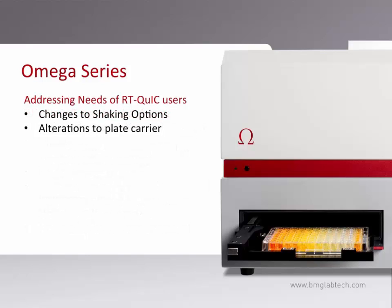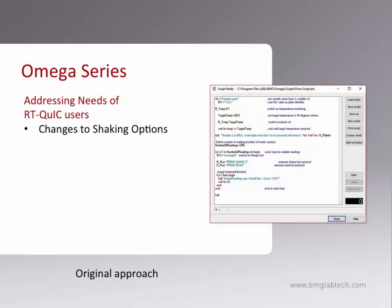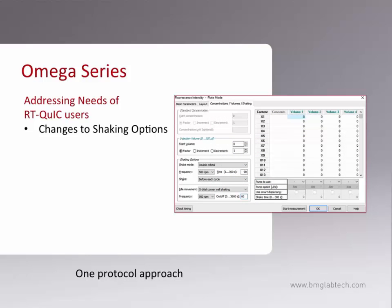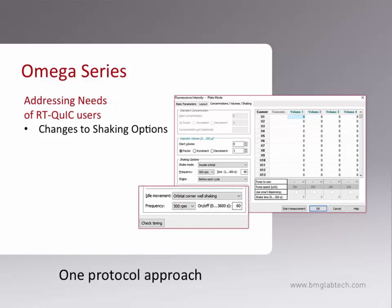As it became apparent to BMG that the RT-QUIC assay was very important among a segment of our customers, we sought their input as to how we might improve. When the RT-QUIC assay was originally designed, achieving the required shaking required a protocol distinct from that used to detect thioflavin T signal, and these two protocols were run repeatedly using BMG's scripting capability. Although the script approach was extremely successful, we thought it would be better if it was not required. To make a one-protocol approach possible, we changed the shaking capabilities so you can now perform a shaking action whenever the plate is not being read. The shaking can be constant or cycled on and off.